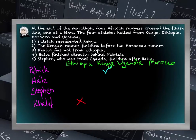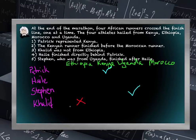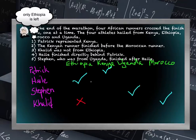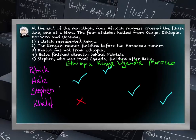Hele finished directly behind Patrick — again, that's ordering information, so we save it for the next step. Stephen, who was from Uganda, finished after Hele — also ordering information. So from the pairing clues: Patrick is from Kenya, Stephen is from Uganda. That leaves two options for Khalid — Ethiopia or Morocco — but Khalid is not from Ethiopia, so he must be from Morocco. And that means Hele is from Ethiopia. Now we know where all four runners are from.